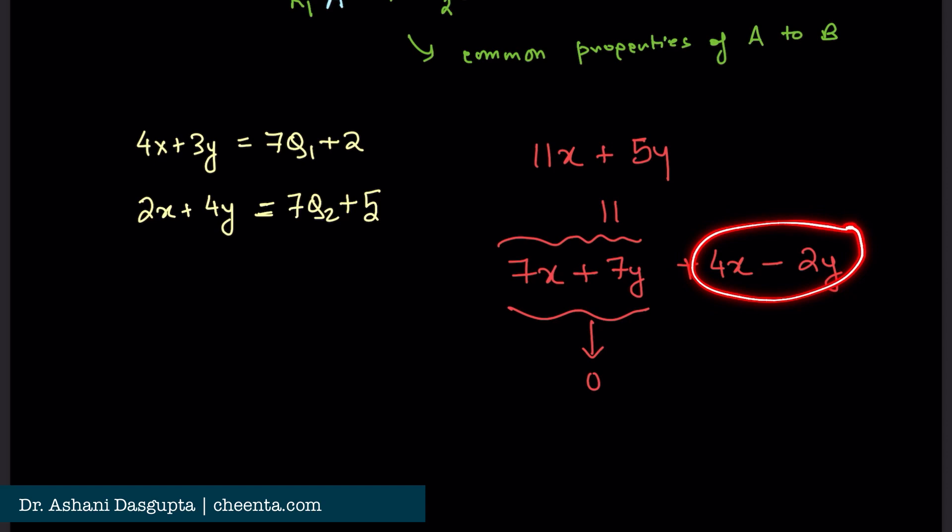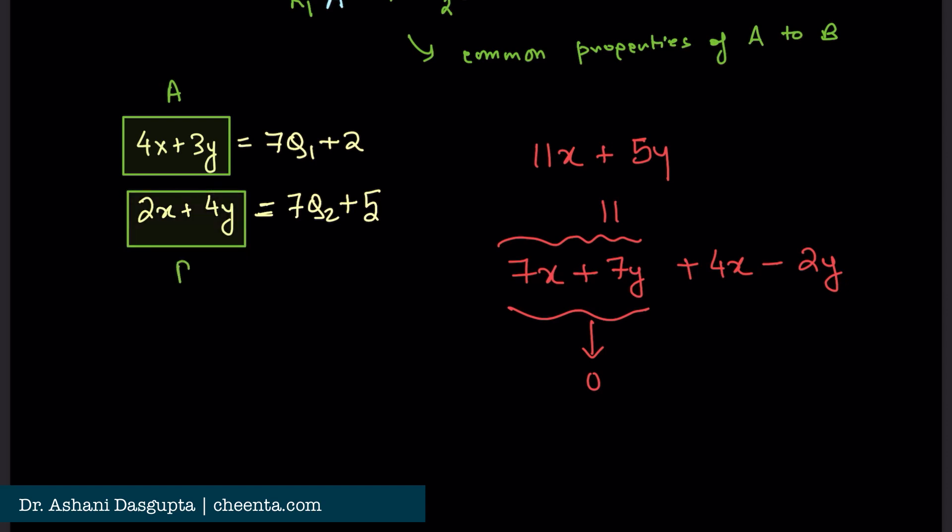What we will do is we will write 4x minus 2y as a linear combination of this and this. If this is capital A and this is capital B, then we will write 4x minus 2y as a linear combination of capital A and capital B. With a little bit of experimenting, you can easily see that this is simply 2a minus 2b.